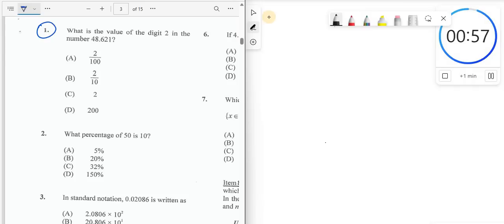What is the value of the digit 2 in the number 48.621? Now, after the point, we have the decimal places. The first decimal place is the 10th place. So because a 6 is there, we say 6 tenths. In the second decimal place, we have the 100th place, in other words. And so this is 2 hundredths.